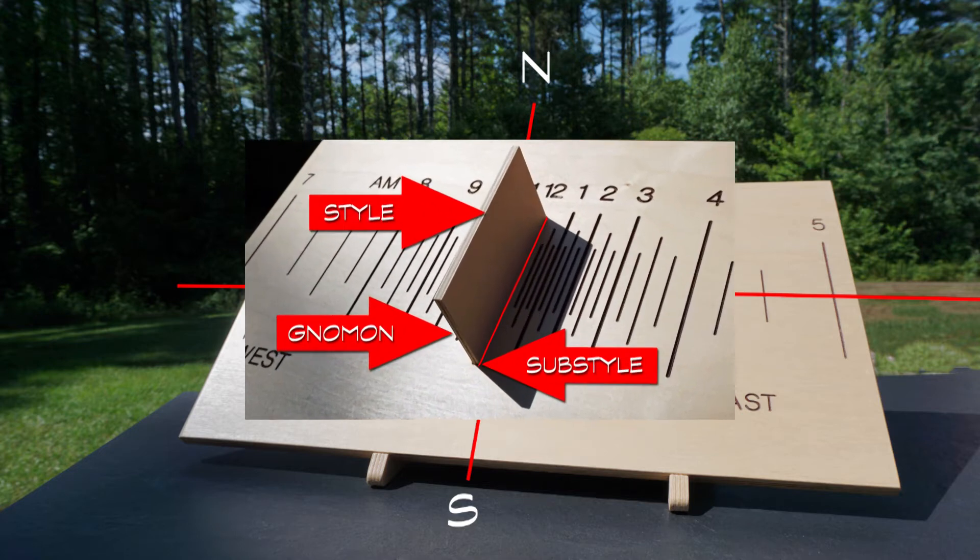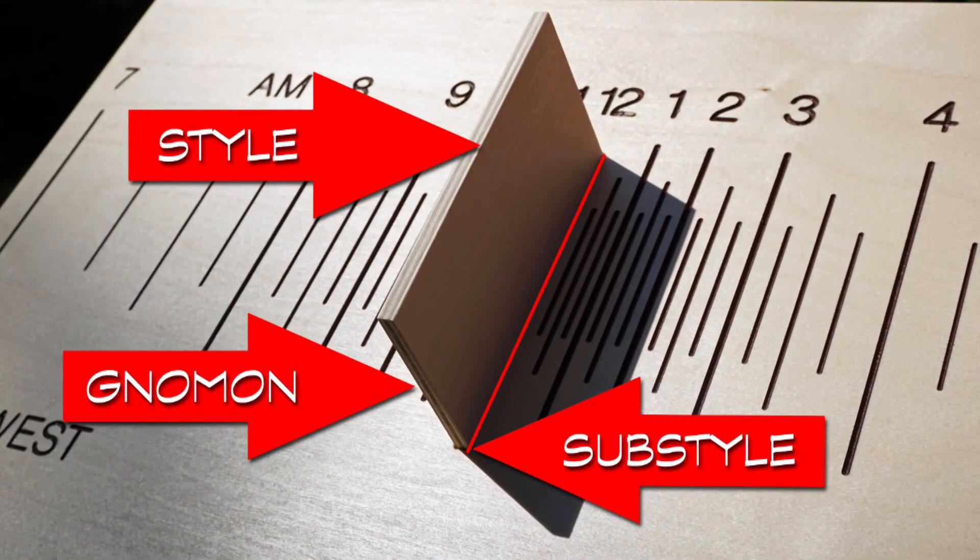To introduce a few useful sundial terms, the shadow casting device is called the gnomon. The edge of the gnomon that actually casts that shadow is called the style, and where the line of the style meets the dial surface is called the substyle.